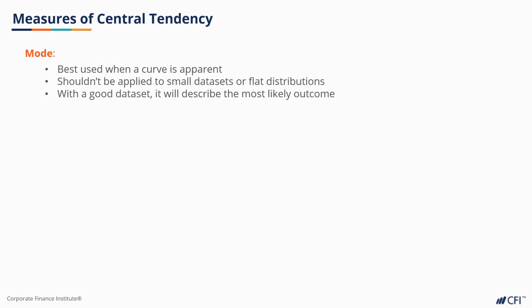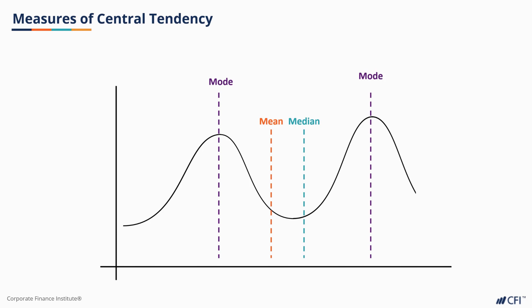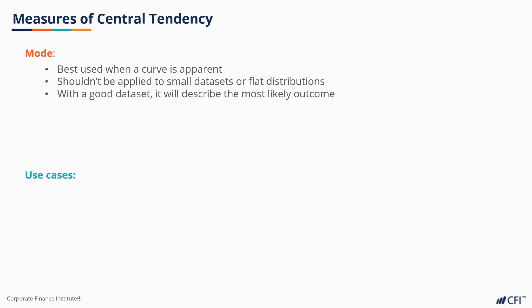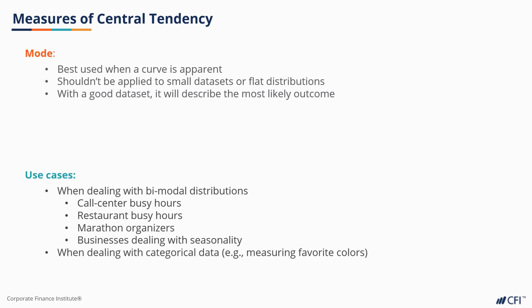This would be particularly true in a situation where there is a bimodal distribution. In this scenario, both the mean and the median do a poor job of predicting when the restaurant will be busiest as they land somewhere in the middle of our two humps. The mode would tell us exactly the peak hour. We could even apply a bimodal approach to identify multiple modes. Call centers, restaurants, marathon organizers, or any business that deals with seasonality can really benefit by applying the mode in data analysis.